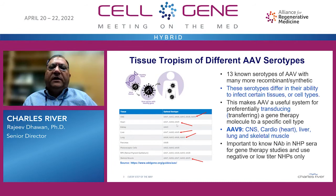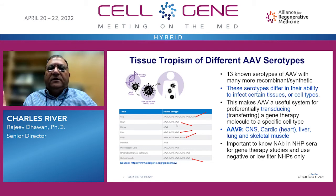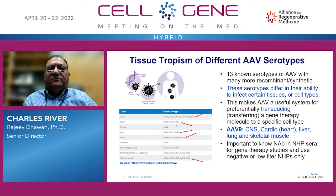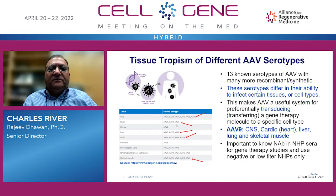Regarding tissue tropism of different AAV serotypes — these 13 and many more recombinant and synthetic serotypes differ in their ability to infect certain tissue types or cell types. This makes it a very good system for preferentially transducing or transferring a gene therapy molecule or gene insert to a specific cell type. For example, AAV9 is useful in many, many studies, whereas AAV8 is only useful for a smaller number of diseases like pancreatic diseases.